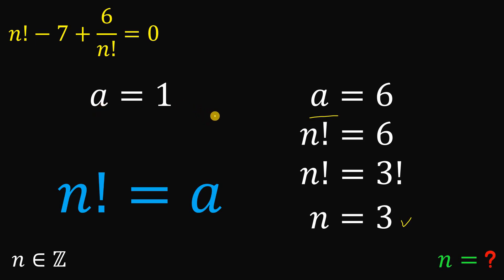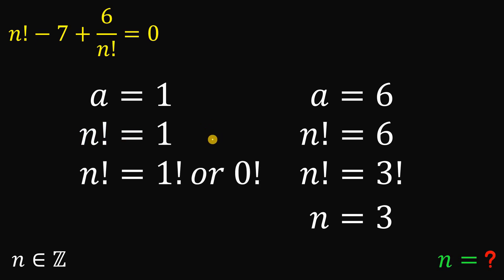Now how about if a equals 1? So n factorial is also equal to 1. And if n factorial equals 1, we have two possible values for n, because 1 factorial is 1 and 0 factorial is also 1. Therefore, n can be 1 or 0.